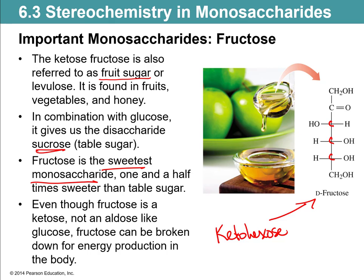For identification purposes, just count the carbons in the chain — that tells you whether it's a hexose or a pentose. Then look at where the double bond oxygen is: if it's on the end, it's an aldo; if it's on the second carbon, it's a keto.